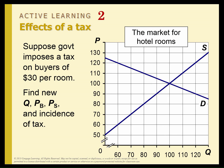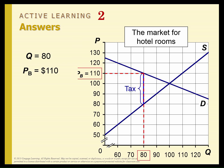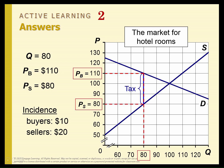Suppose the government imposes a tax of $30. We're going to slide the $30 tax wedge in there. That gives us our new quantity and new price. The old equilibrium price was $100. Buyers now pay $10 more than they would have originally. Sellers lose that extra amount. It doesn't matter who's writing the check to the government — the incidence of the tax in this case is $10 for buyers and $10 for sellers.